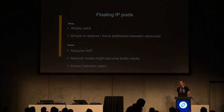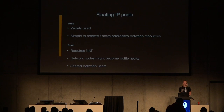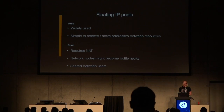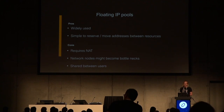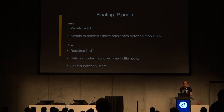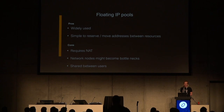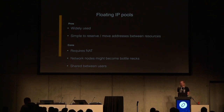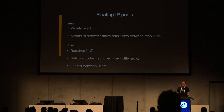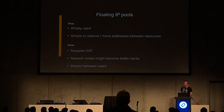The pros of floating IP pools are that they are very widely used. It's simple to reserve and move addresses between resources — you just attach and detach the address you need, or you can keep it in reserve even if it's not attached to a specific resource. Some cons: it requires NAT, which might not be desired. Network nodes might become bottlenecks as they have to do the routing and NAT. You can't egress directly from the compute nodes in this case. And they are shared between users.